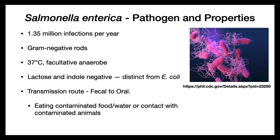Our next entry in the pathogen parade is Salmonella enterica. Salmonella enterica causes about 1.35 million infections per year. It is, just like E. coli, a gram-negative rod that grows at 37 degrees centigrade at an optimal temperature and is a facultative anaerobic.